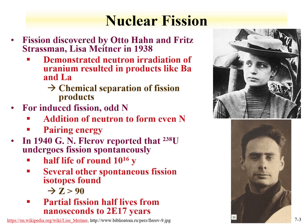In 1940, Georgi Flerov, a Soviet scientist, reported that uranium-238 underwent spontaneous fission — fissioning on its own as another route of decay. Uranium-238 spontaneous fission half-life is around 10^16 years. The half-life of that isotope is 4.5 × 10^9 years, so the spontaneous fission half-life is much longer than the alpha-decay half-life. Several other spontaneous fission isotopes were found with partial fission half-lives ranging from nanoseconds to 2 × 10^17 years.